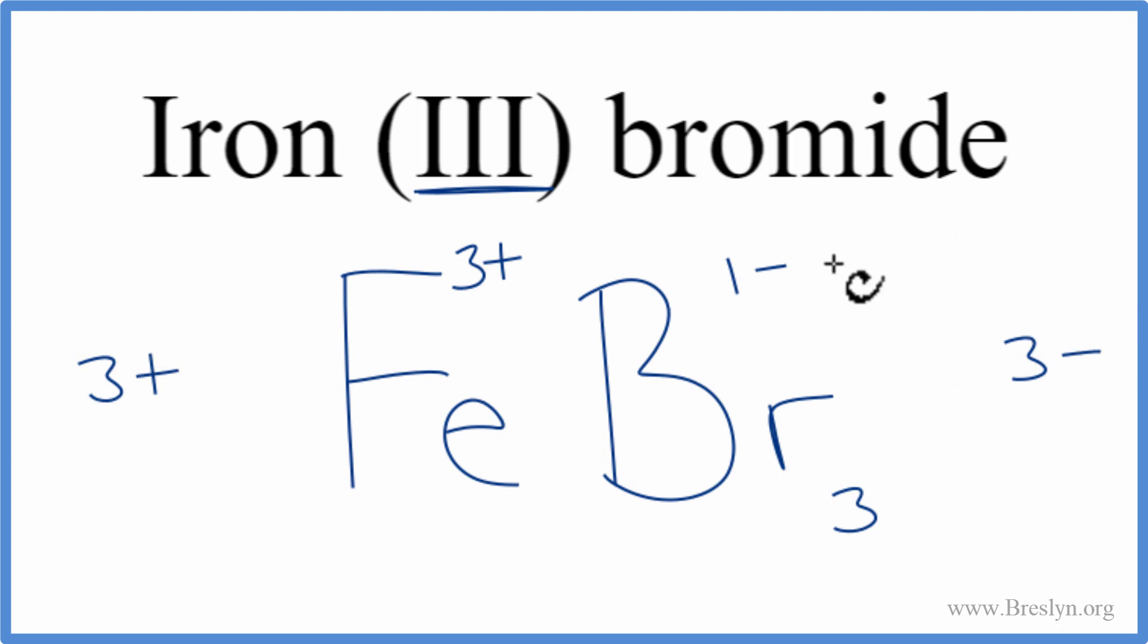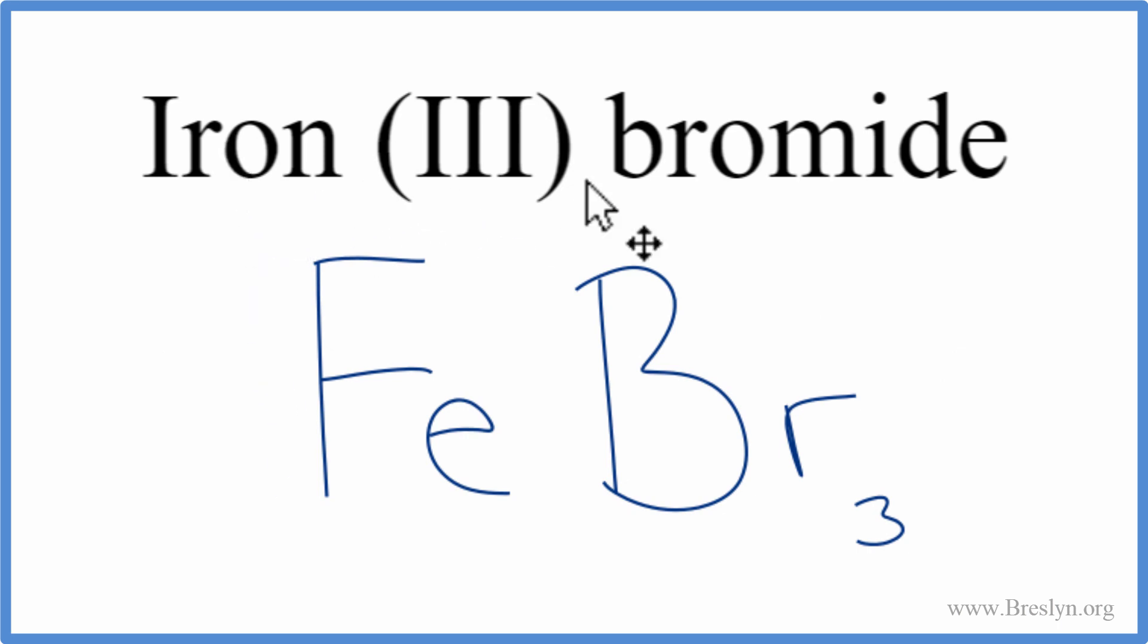We're done. This is the correct formula for iron (III) bromide. Let's clean it up a little bit. That's it. Iron (III) bromide, FeBr₃. This is Dr. B, and thanks for watching.